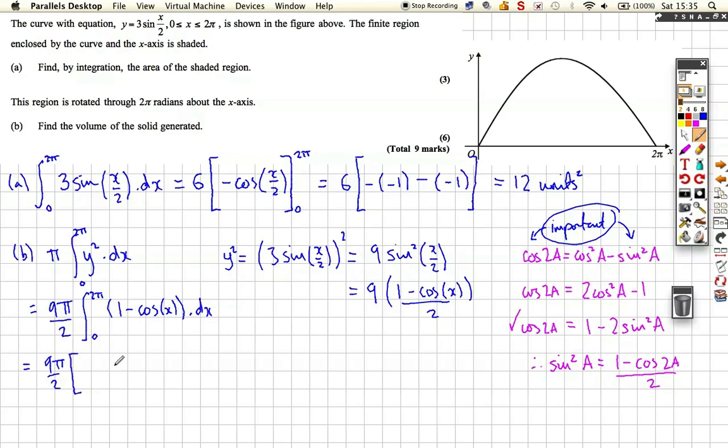In brackets we're going to get: increase power by 1 becomes x, and cosine integrates to sine, so it's minus sinx between our limits 0 and 2π. That comes out as 9π/2, and then we're going to put 2π in, so that gives us 2π minus sine of 360 degrees is 0.